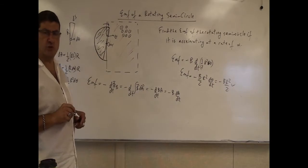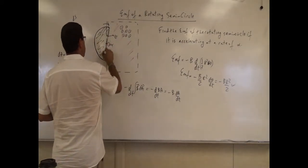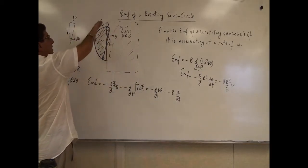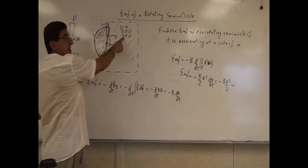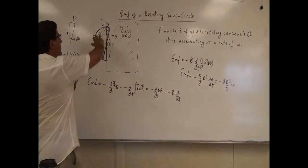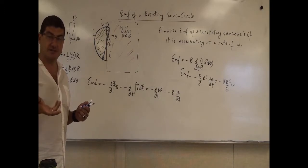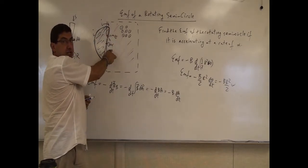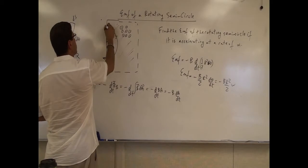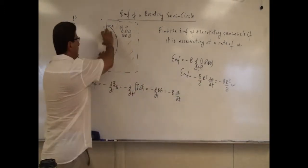The negative sign means the current flows clockwise through the wire. This clockwise current creates a magnetic field into the board, opposing the external field that points out of the board — consistent with Lenz's law since the magnetic flux is increasing. This clockwise current continues until the semicircle has rotated 180 degrees, at which point flux is maximum. After that, the flux starts decreasing, the EMF becomes positive, and the current reverses direction.